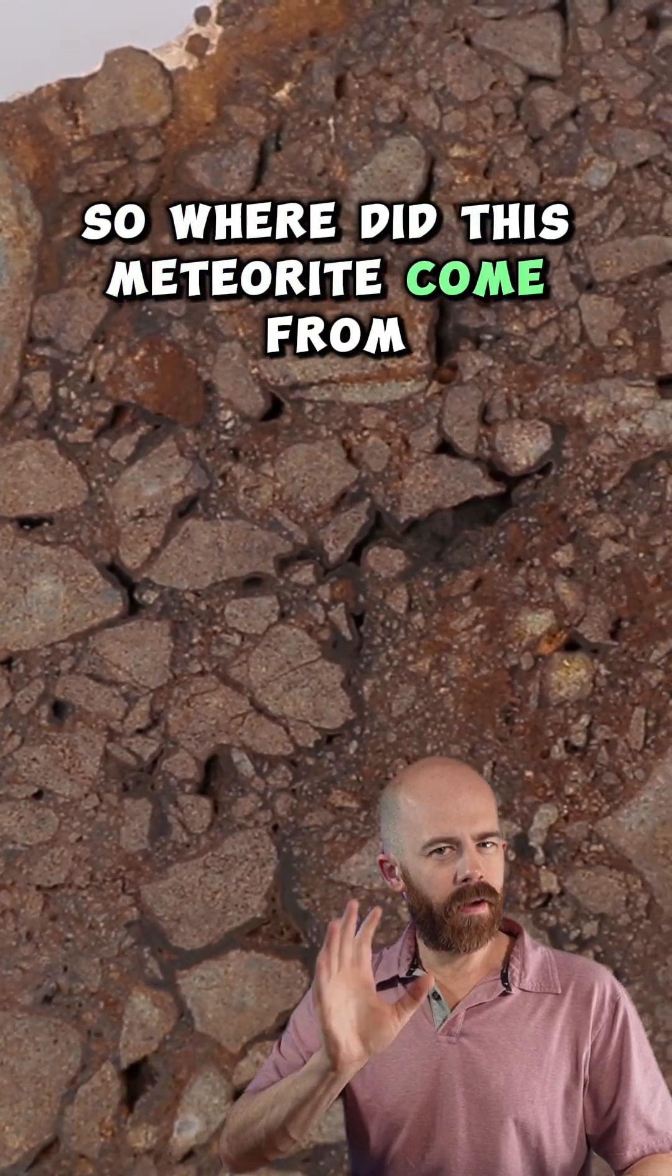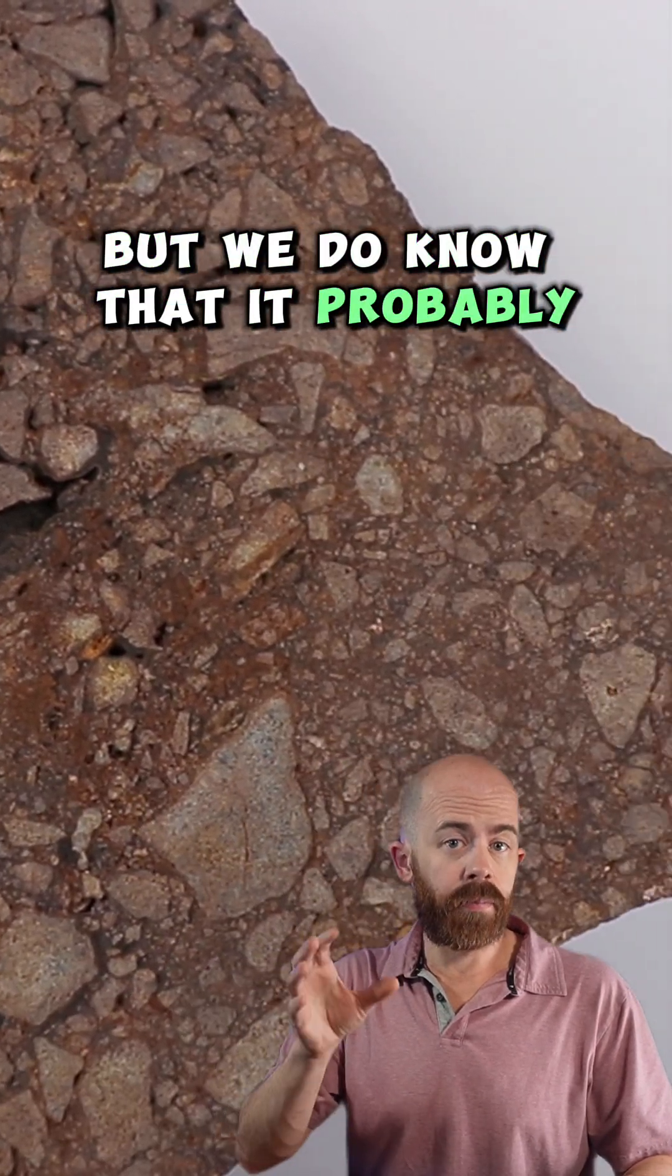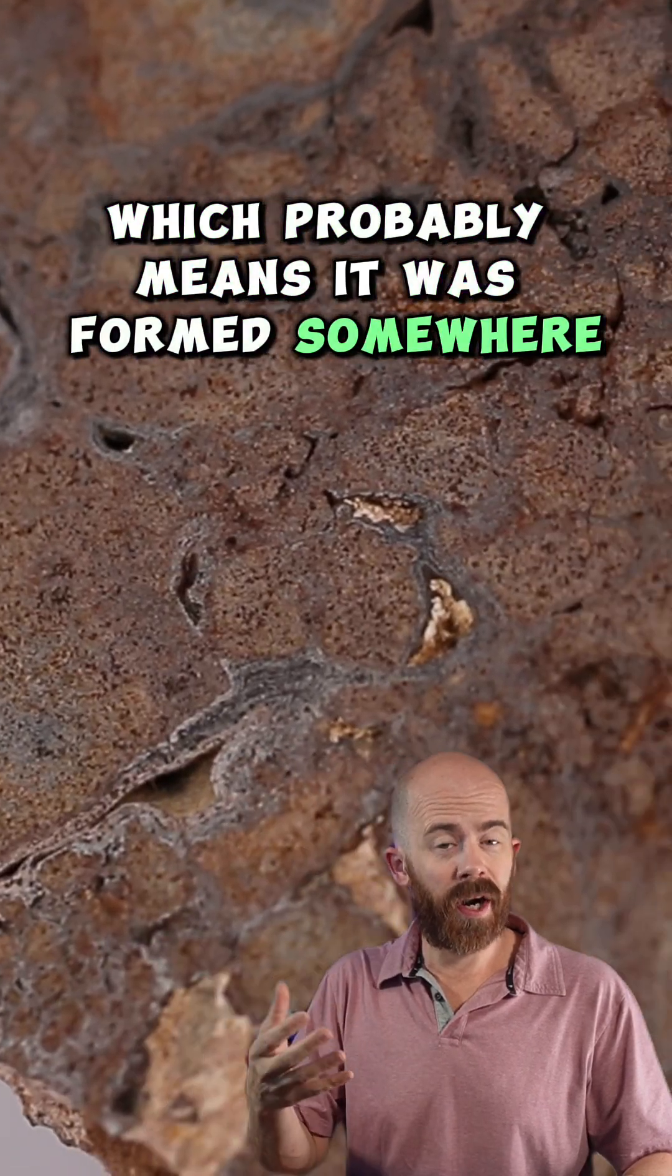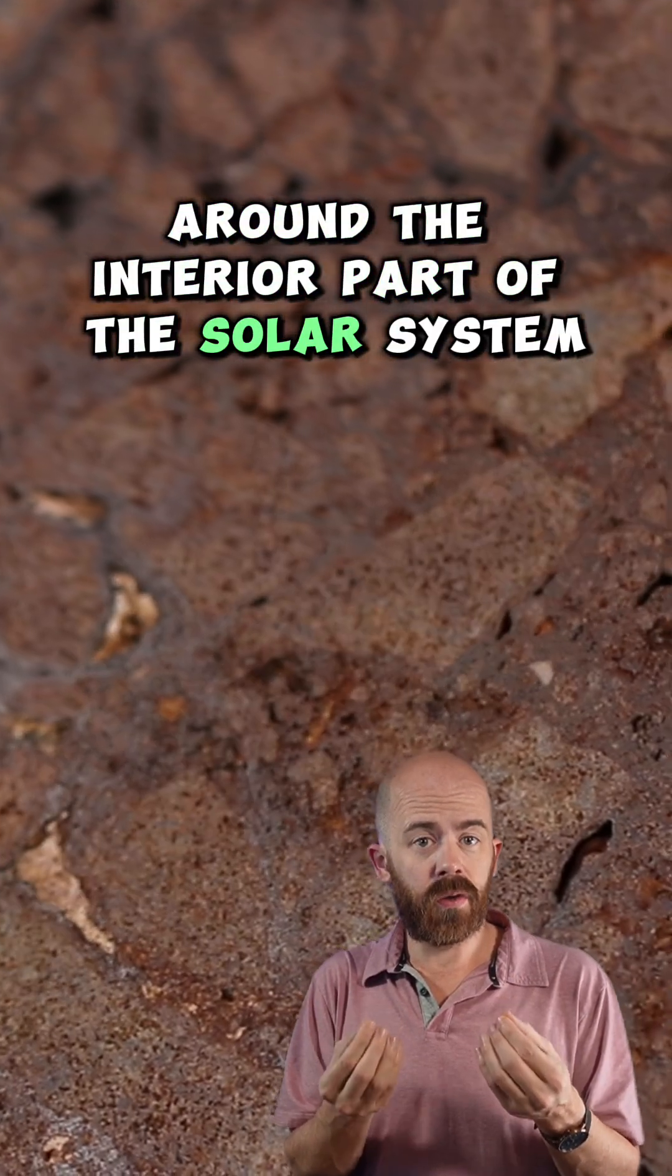So where did this meteorite come from? Well, we don't totally know, but we do know that it probably formed in a low oxygen environment, which probably means it was formed somewhere around the interior part of the solar system.